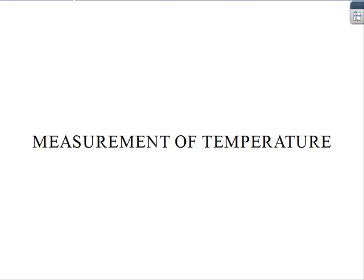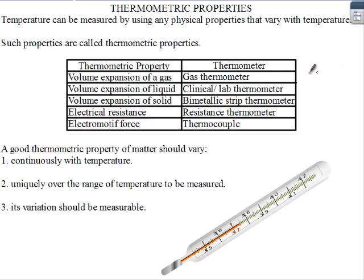When we say temperature, we're talking about the degree of hotness of a body. Temperature can be measured using any physical property that varies with temperature. Such properties are called thermometric properties.